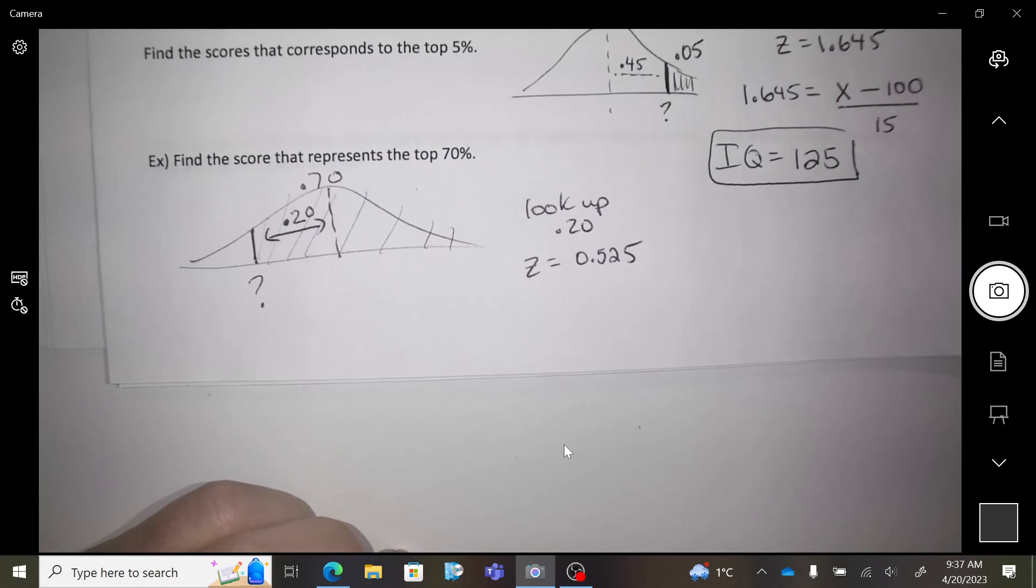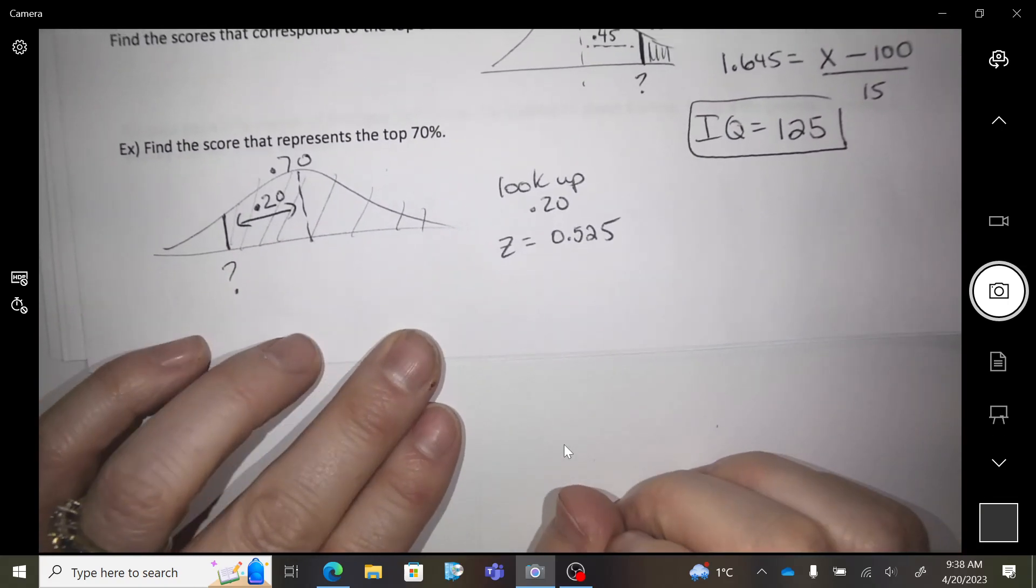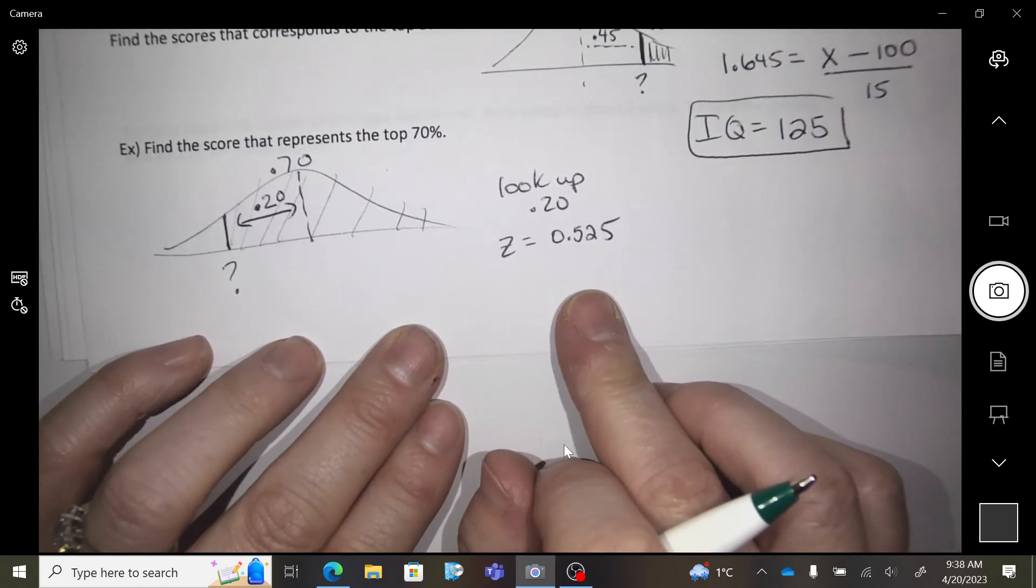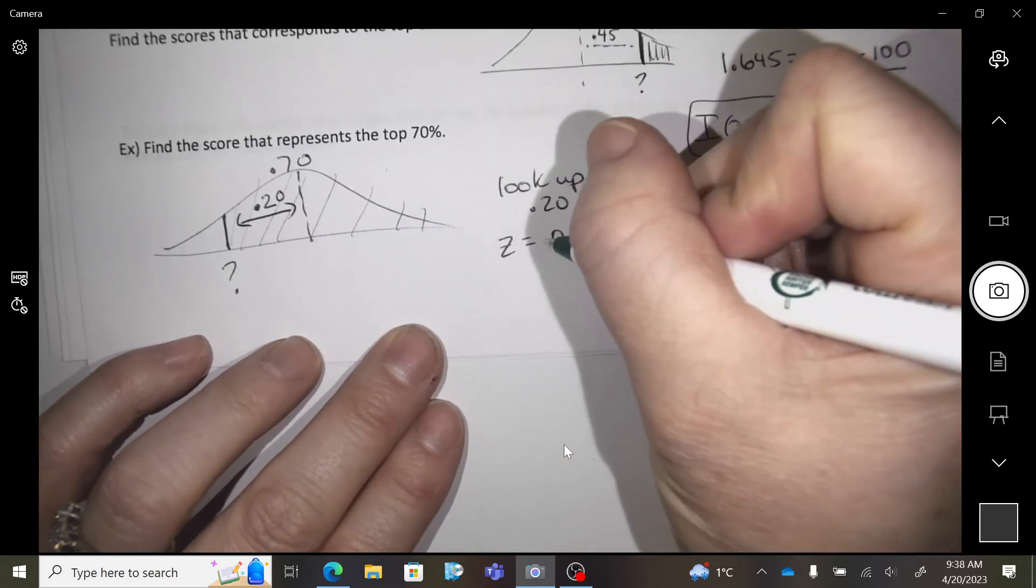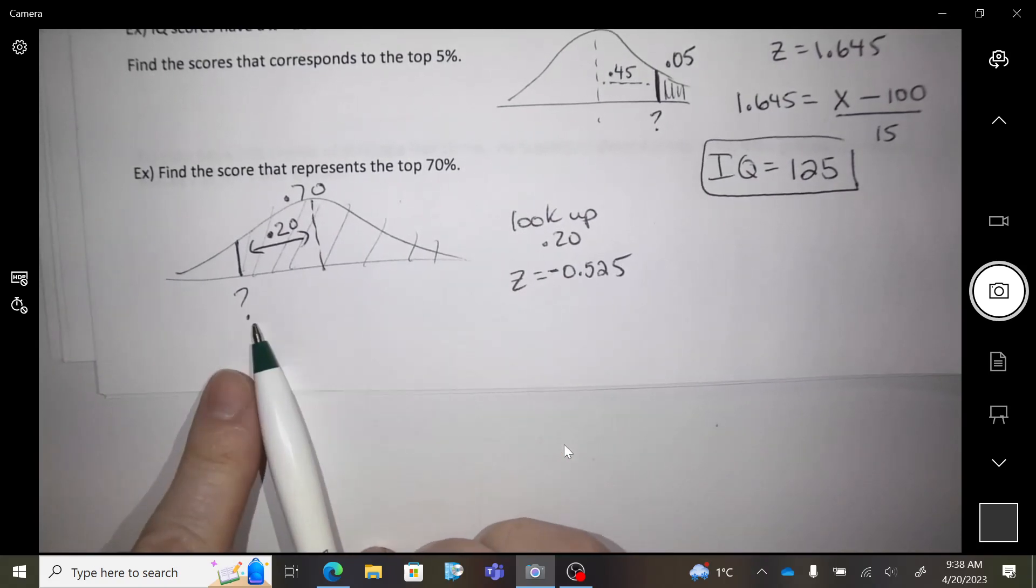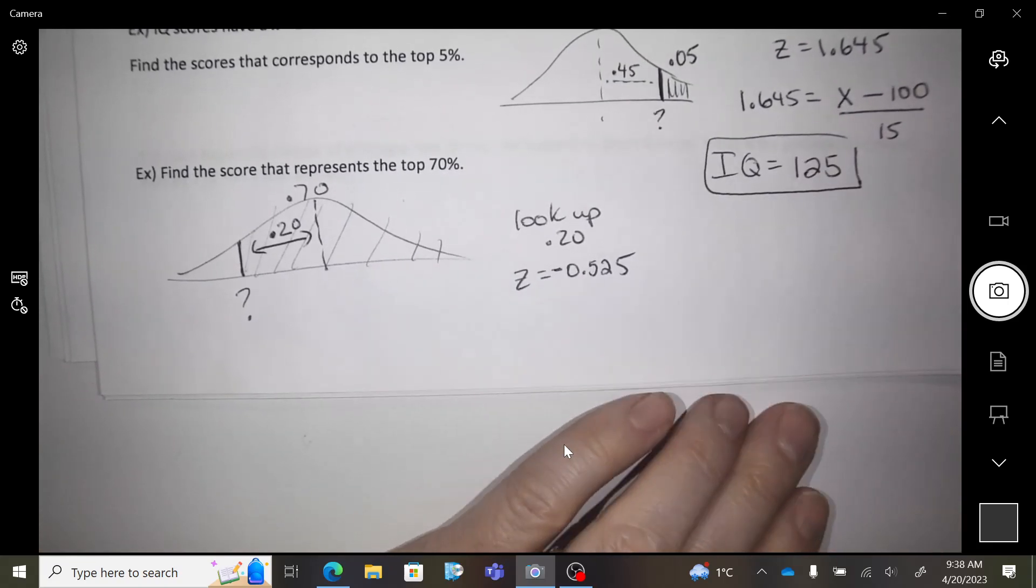But wait, there's something that's missing. What's the missing thing? This is not the z-score. It's negative. This chart only does positive, and if it's negative, you just have to make sure you look, because look at where I am. I'm below the average, so I have to be a negative. So now, z equals my score minus mean over standard.